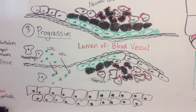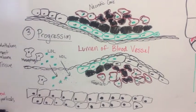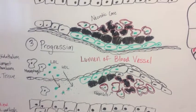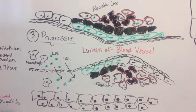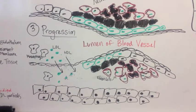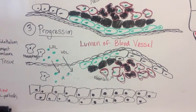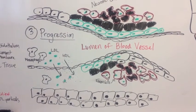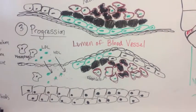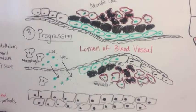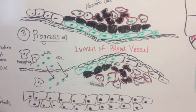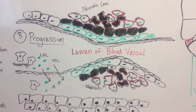Stage 3 of the development of atherosclerosis is progression. The necrotic core continues to grow as LDL and HDL particles penetrate in the shear stress area of the blood vessel. Macrophages are called in to endocytose oxidized LDL particles and form foam cells which die.